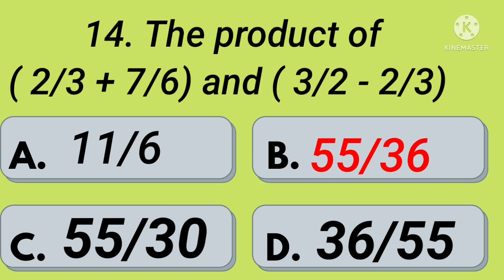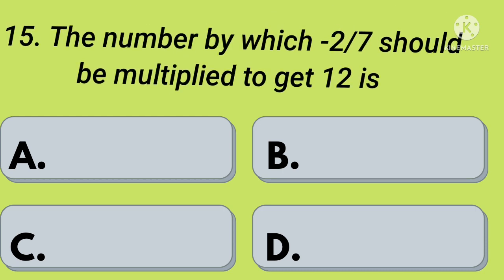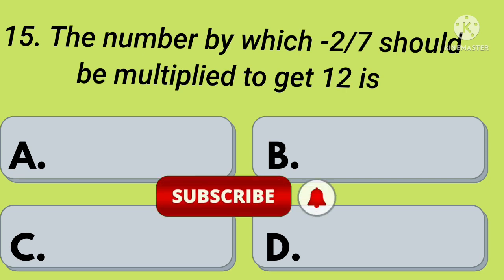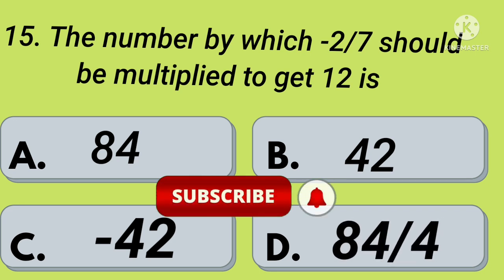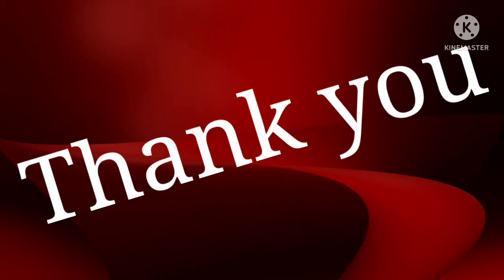Fifteenth question: the number 2 by 7 should be multiplied to get 12 is — option A: 84, option B: 42, option C: minus 42, option D: 84 by 4. Your time starts now. Right, option C: minus 42. Thank you, friends.